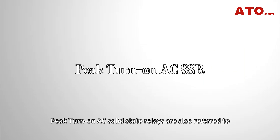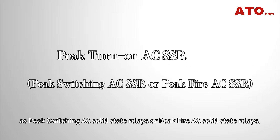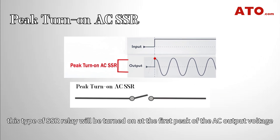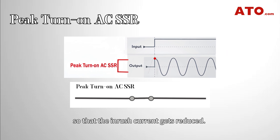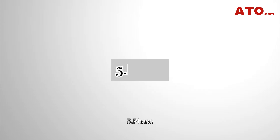Peak turn-on AC solid-state relays are also referred to as peak switching or peak fire AC solid-state relays. When the input control signal is applied, this type of SSR will be turned on at the first peak of the AC output voltage, so that the in-rush current gets reduced. If the input control signal is removed, the relay will be turned off.